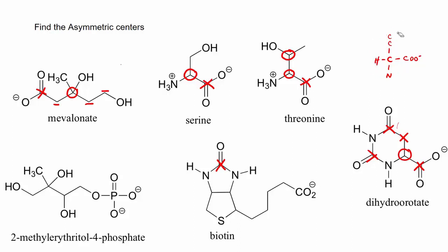Here in biotin, this group and this group are asymmetric centers. These others are not. This one is not because it has two hydrogens. Any methylene group with two hydrogens is not an asymmetric center. This group also has two bonds showing, meaning two hydrogens — that is not an asymmetric center. This one is an asymmetric center, this one also is an asymmetric center, and this one is not.